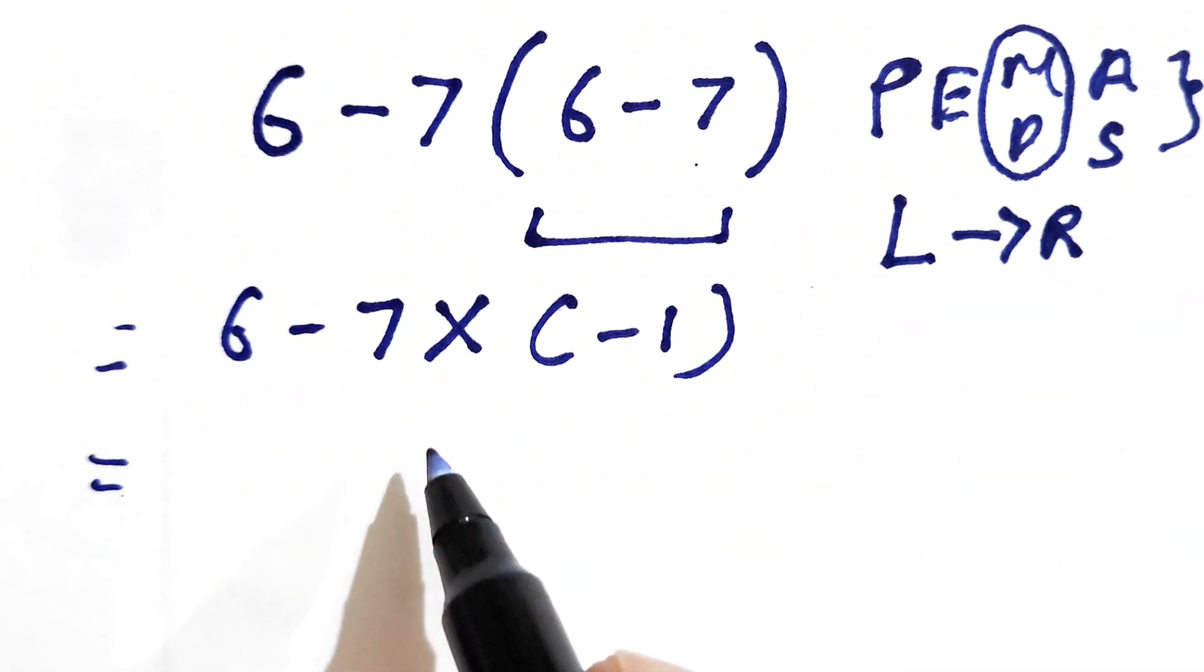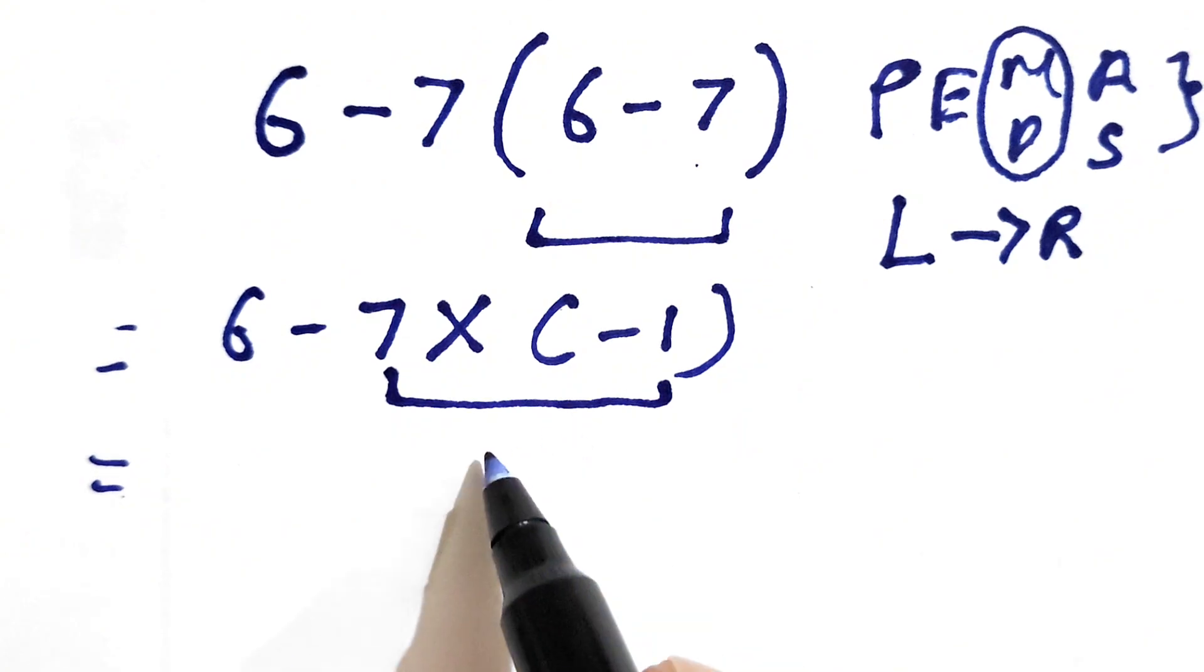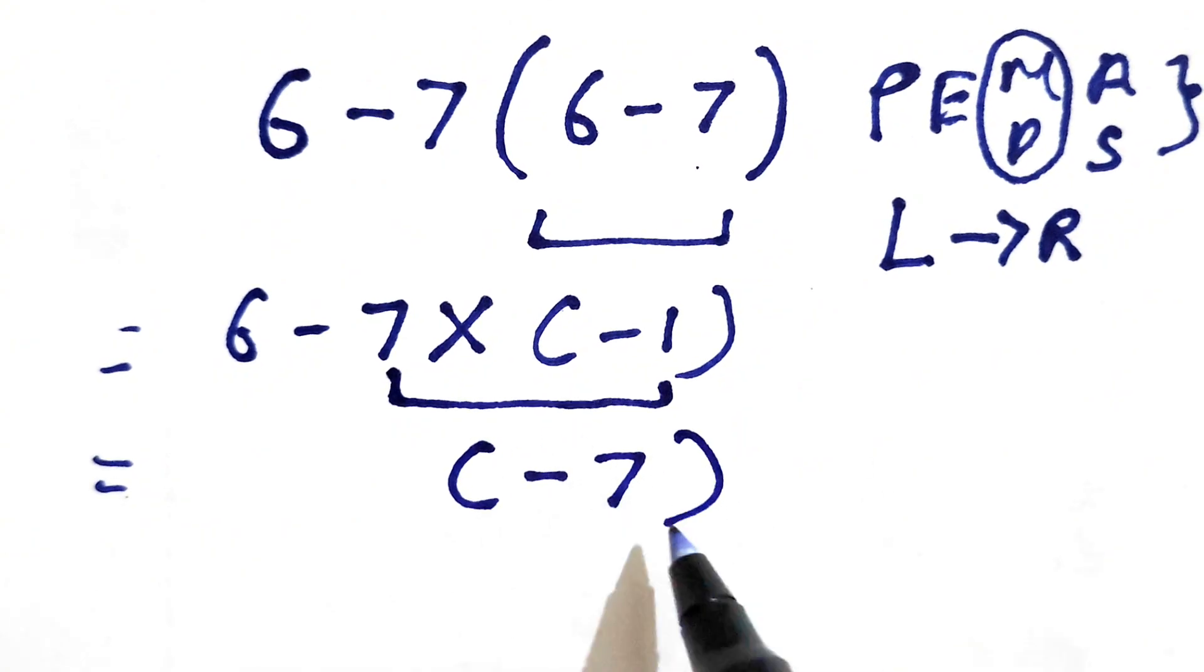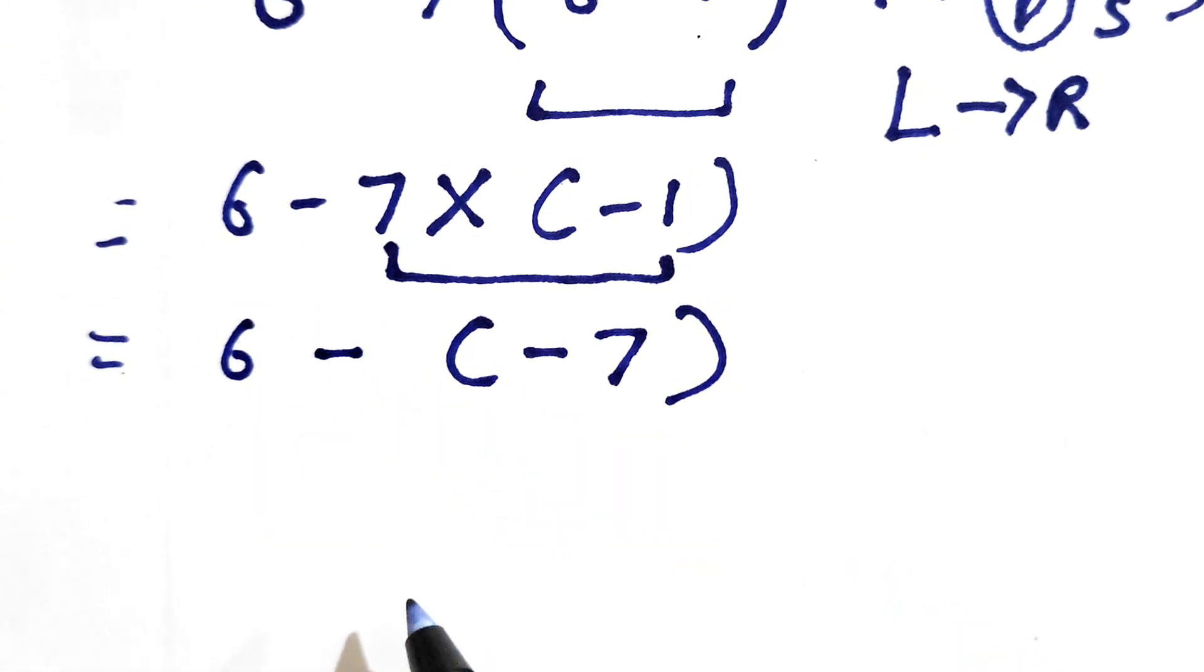So we solve 7 times negative 1. 7 times negative 1 gives us negative 7, and now we need to write this 6 and this minus as it is.